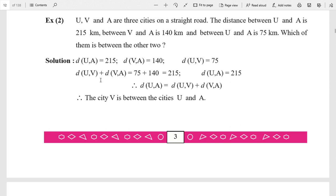That distance UV plus distance VA is equal to 75 plus 140, that is 215. The right side is 215. If the right side is the same, the left side is the same.